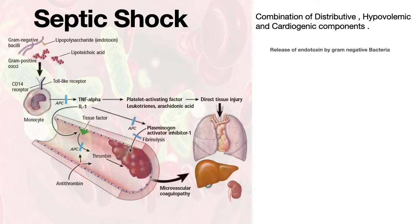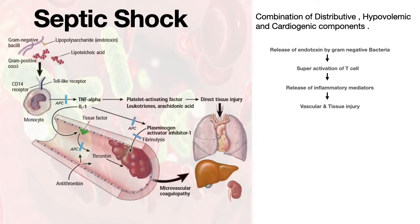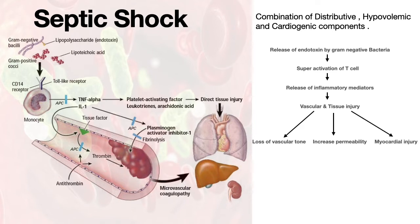As there is uncontrolled growth of bacteria, there occurs the release of endotoxins. These endotoxins combine with T-cells and superactivate them, which leads to massive release of inflammatory markers. These markers cause vascular and tissue injury, leading to loss of vascular tone, increased permeability, and injury to the myocardium. Loss of vascular tone causes pooling of blood, hence poor distribution.